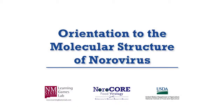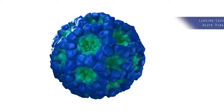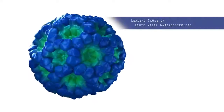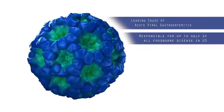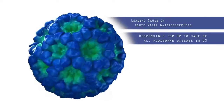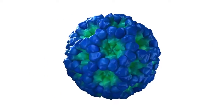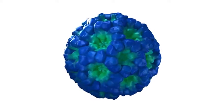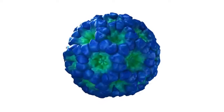Orientation to the Molecular Structure of Norovirus. Norovirus is the leading cause of acute viral gastroenteritis and is responsible for up to half of all foodborne disease in the U.S. One way scientists attempt to understand the virus is through analyzing its structure.